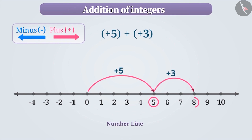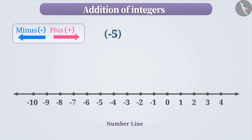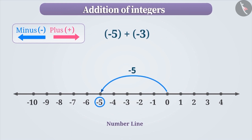Similarly, if we have to find the value of minus 5 plus minus 3, move 5 steps towards the left of 0. And since the sign of the second integer is negative, move 3 steps again towards the left of the first integer. We now arrive at minus 8, which is the result of minus 5 plus minus 3.